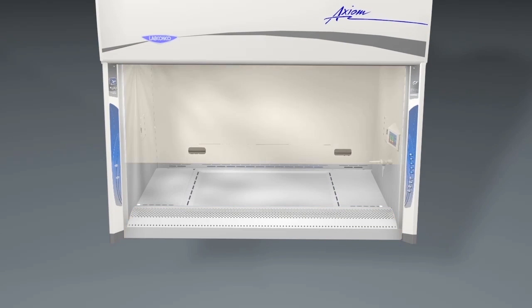The air inlet grill, safety glass sash, and work surface of the Type C1 have similarities to other Class II biosafety cabinets.